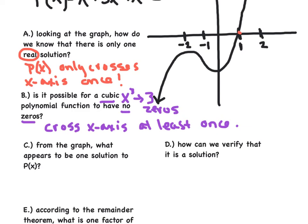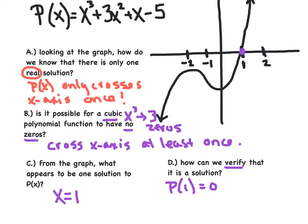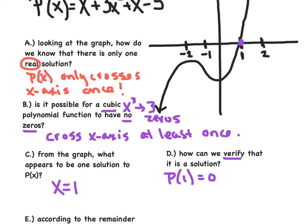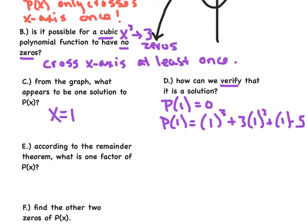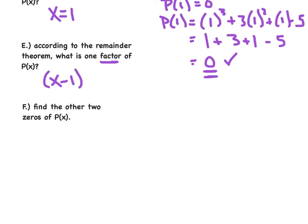All right, next question. From the graph, what appears to be one solution of P of x? So we could easily say that x equals one because of this point right here appears to be one solution. How could we verify that solution? Well, the remainder theorem says that P of one should equal zero. So let's go ahead and test that out. I'm going to take a peek at, so x cubed plus three x squared. So let's say we'll substitute the one, and that's going to be one cubed plus three times one squared plus one minus five. And let's see if we can work that out. So that's going to be one plus three plus one minus five. And I believe if you add up all those numbers, you do indeed get zero. So check. Because we got zero and nothing else, we verified that x equals one is a solution. Now, according to the remainder theorem, what's one factor of P of x? And we could say, well, x minus one's got to be the factor if x equals one is the zero.